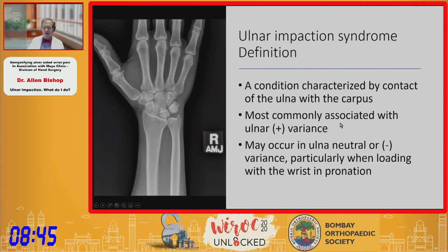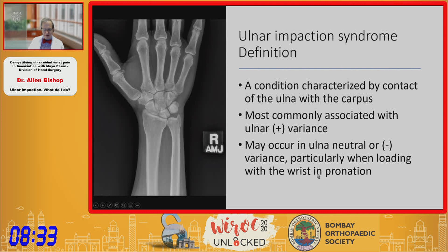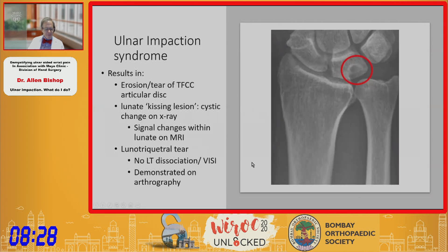Ulnar impaction is a condition characterized by contact of the ulna with the carpus. It's most commonly associated with ulnar positive variants, as seen here, but it can occur in ulnar neutral or ulnar minus variants, particularly with loading with the forearm pronated. It results in many cases in erosion or tear of the TFCC articular disc.